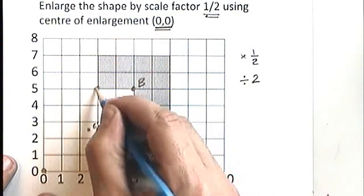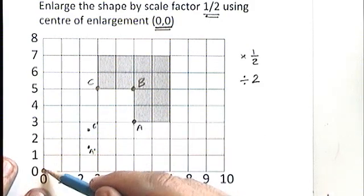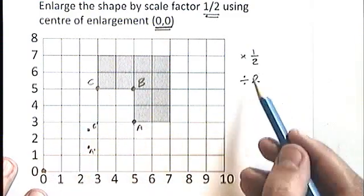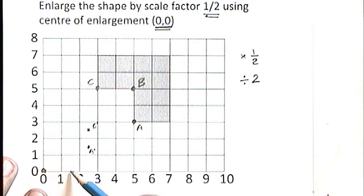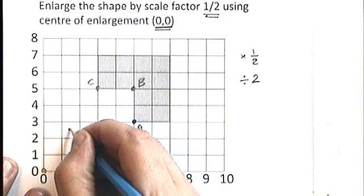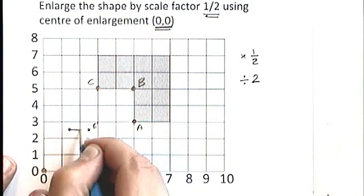If we look at this point here, which I'm going to call C, the coordinates, if I want to go from here to C, I have to go three along, five up. Again, halving those instructions and starting again from here, one point five along and two point five up. Puts point C just in there. So now I can join those three up.